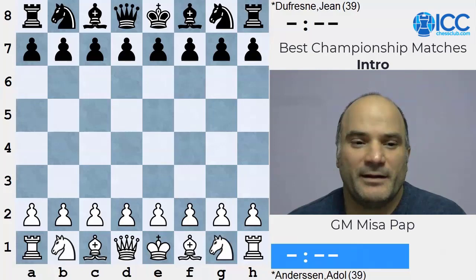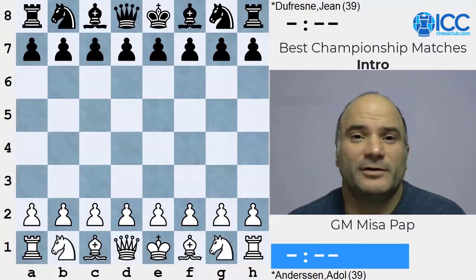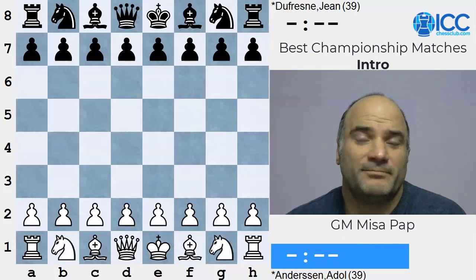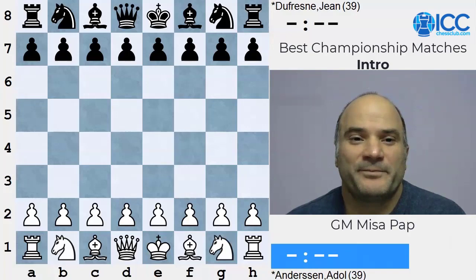We'll go all the way until 2018 and the match between Carlsen and Caruana, which was won by Carlsen. While I'm recording this in 2021, the whole chess world is awaiting the end of the candidates tournament. We're expecting the candidates tournament this year should finish, and then the winner should face Carlsen. The plans are that match should be played around the end of 2021.